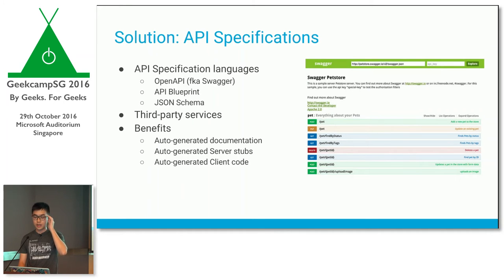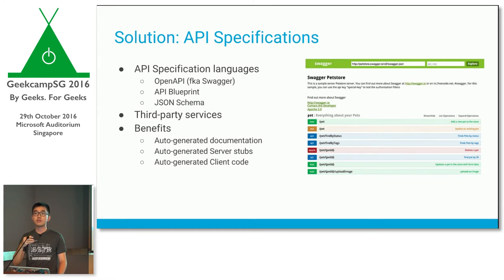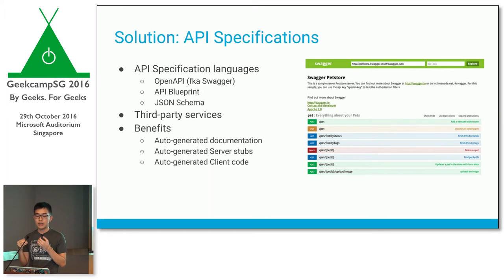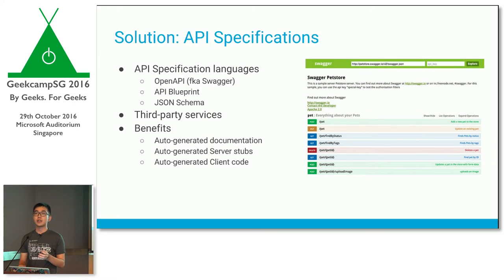The current solution is something called an API specification language. Swagger is one example — it's essentially a DSL to describe your APIs. For example, my API has this endpoint and it returns a string, or it takes a parameter and it's an ID. The benefit of using API spec languages is that you can auto-generate a lot of things from a single source of truth, ensuring documentation matches the underlying implementation. So you can auto-generate documentation, server stubs, client code, and many others.